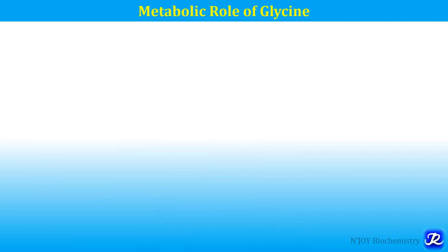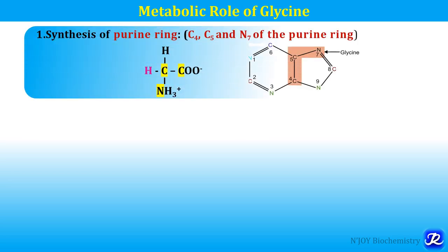Coming to the metabolic role of glycine — which specialized products are synthesized from glycine? First is the synthesis of the purine ring. Carbon number 4, carbon number 5, and nitrogen 7 are derived from glycine. So glycine is involved in the synthesis of the purine ring, particularly C4, C5, and N7.